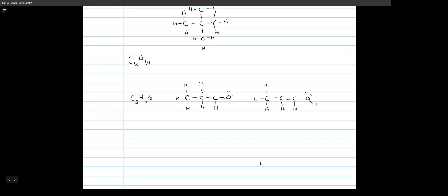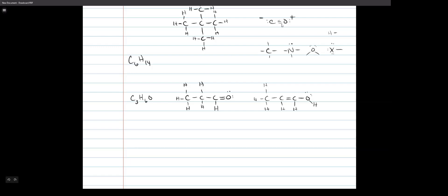Why does oxygen only need one more bond here? Because it already has two bonds. The bonding patterns are: carbon makes four bonds, nitrogen makes three with a lone pair, oxygen makes two with two lone pairs, halogens make one, and hydrogen makes one. This applies to neutral molecules. The exception I can think of is carbon monoxide, which has canceling charges.